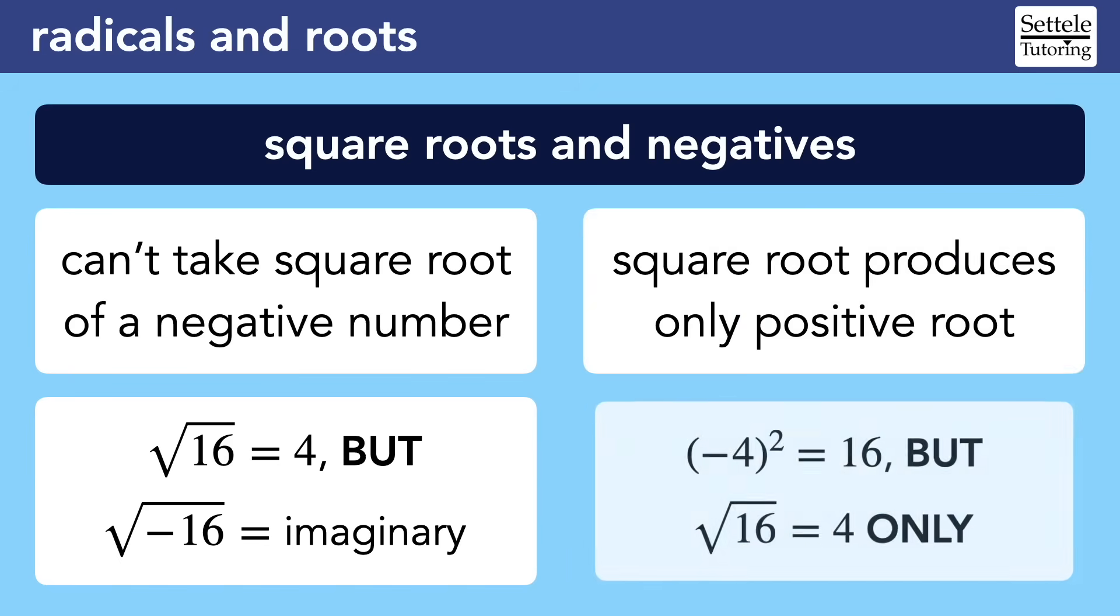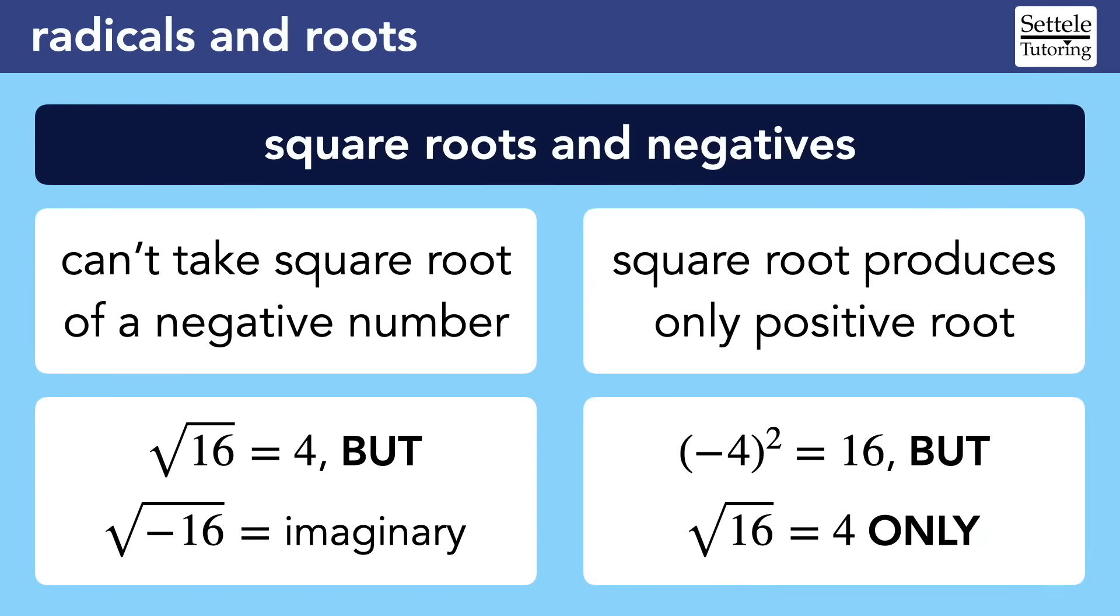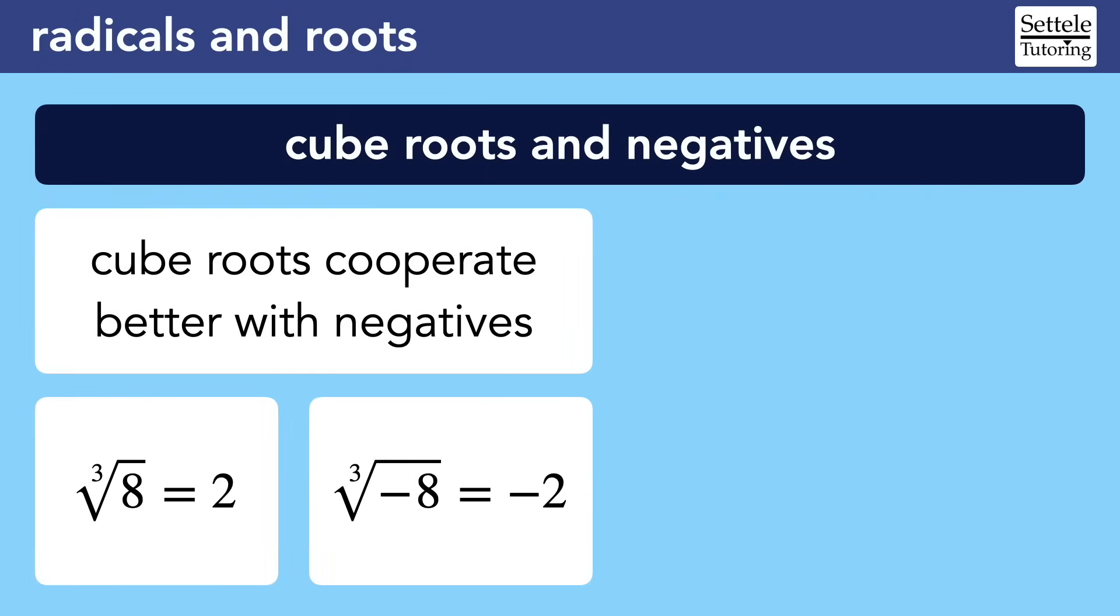You should also know that the square root symbol is only ever asking us for the positive root when it appears in an equation. You might have learned in school that we need to include the negative root, but that's not quite right. If we use the square root when we solve, then we might need to remember the negative root. But if the equation itself contains the radical symbol, then we only want the positive root. The SAT absolutely designs questions with traps based on this rule.